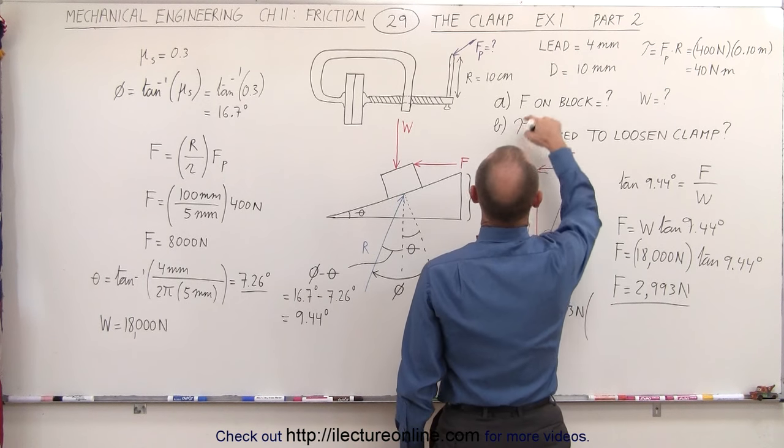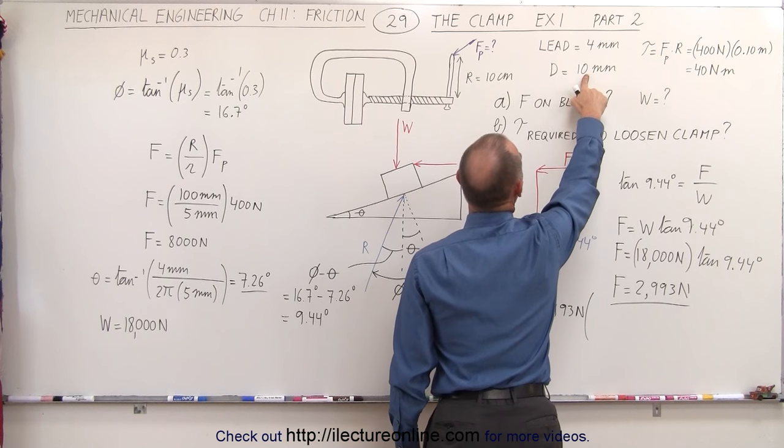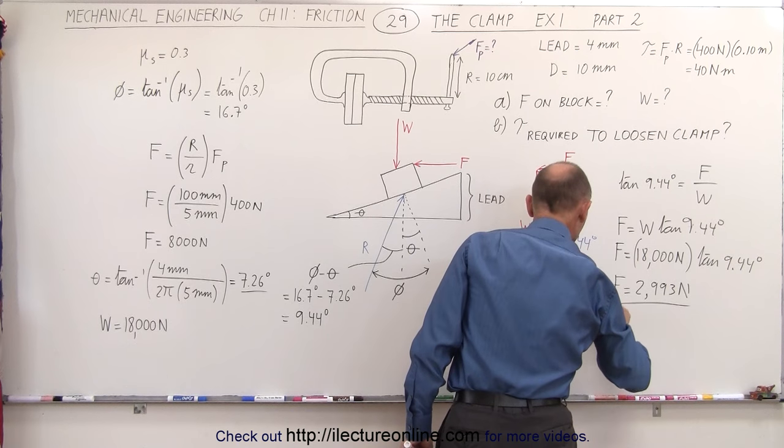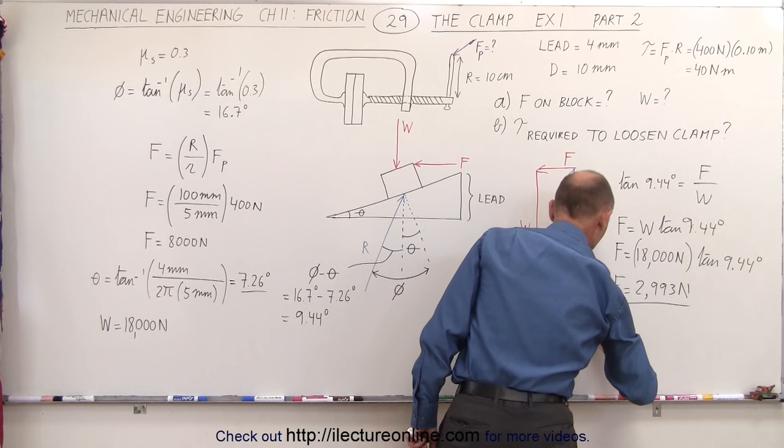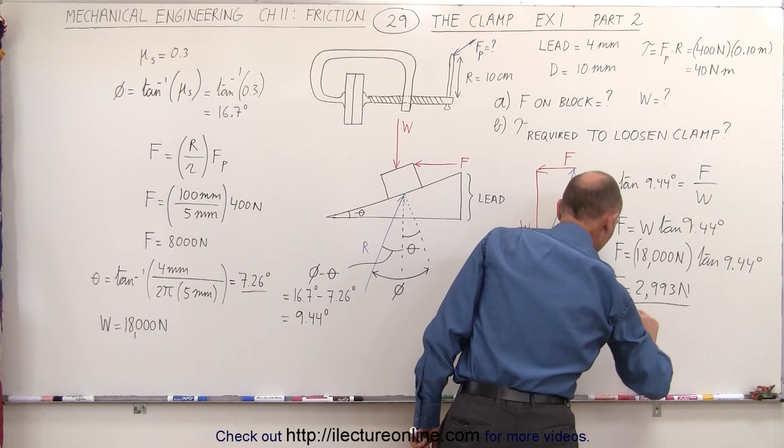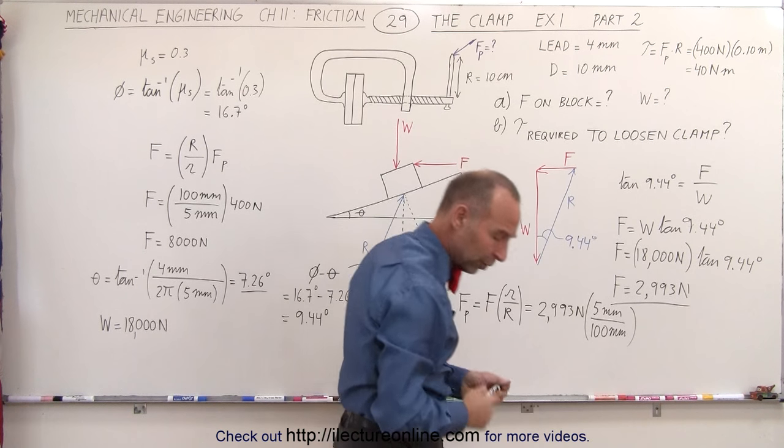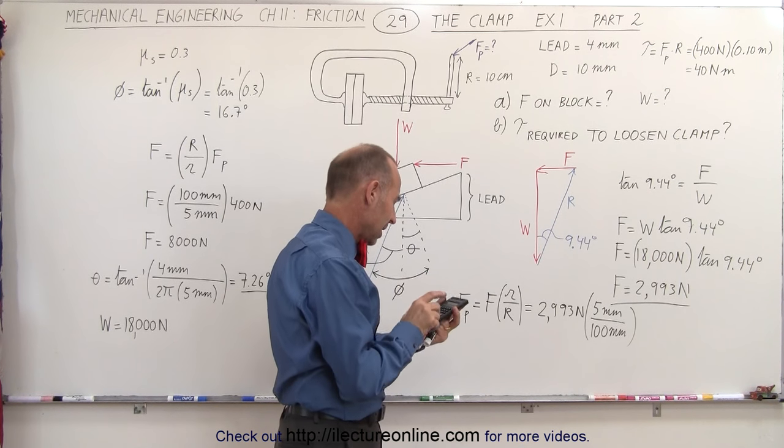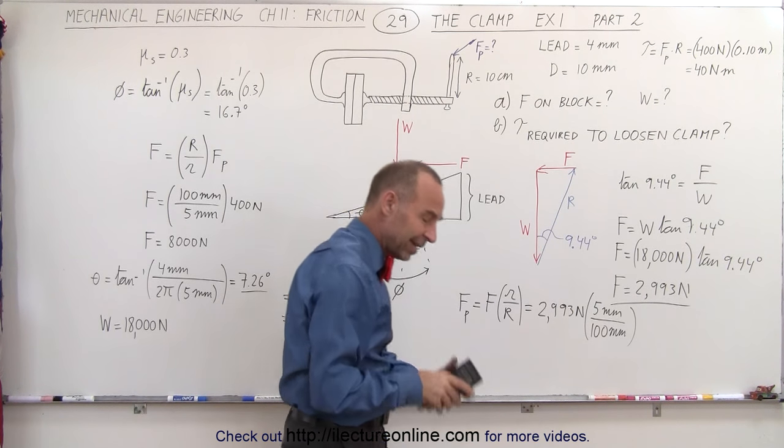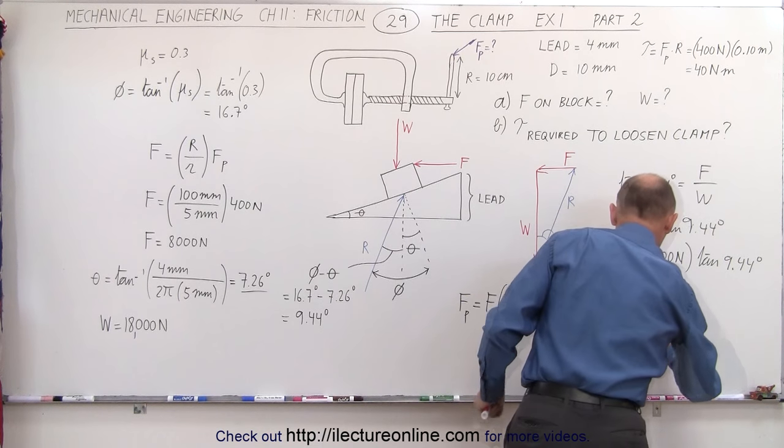That would be equal to 2,993 newtons times the ratio of—the diameter is 10 millimeters, so the radius is 5 millimeters—divided by the moment arm of this handle, which is 100 millimeters. 10 centimeters is 100 millimeters. So that's one-twentieth of that value, which requires a force of 150 newtons.